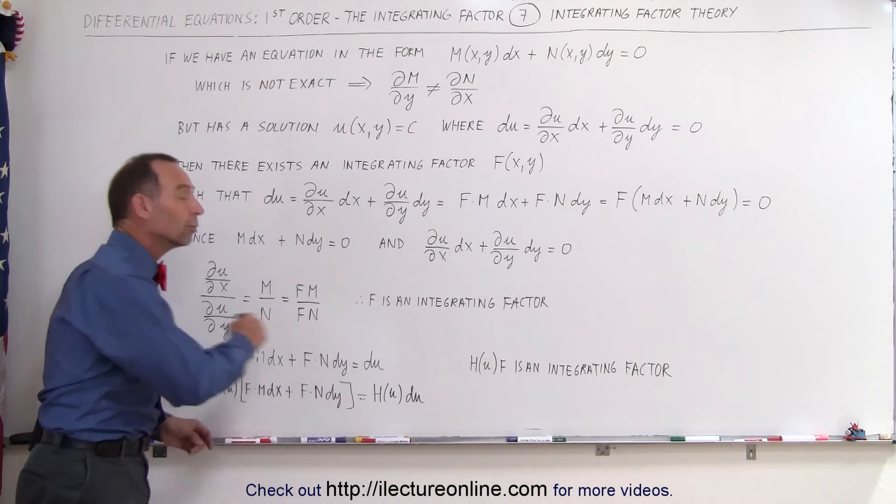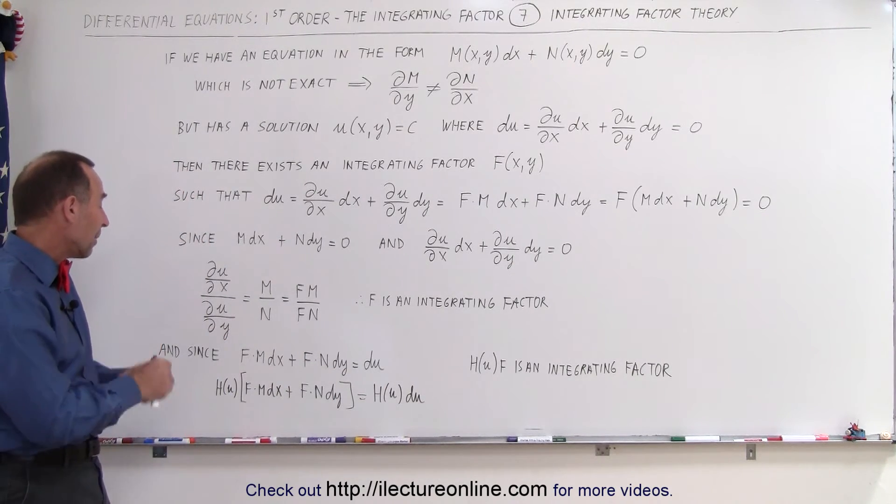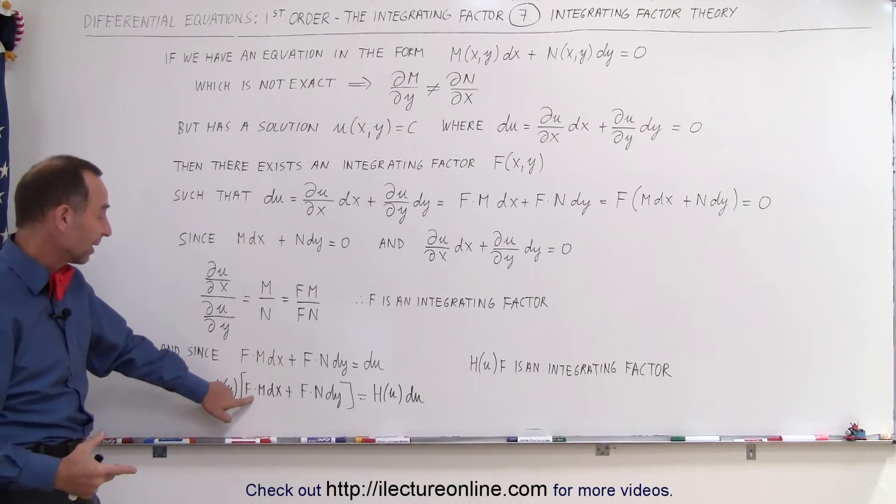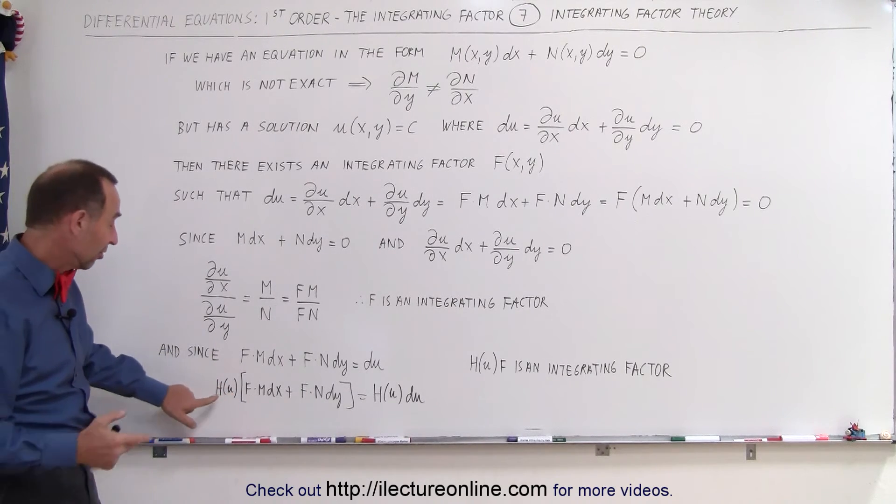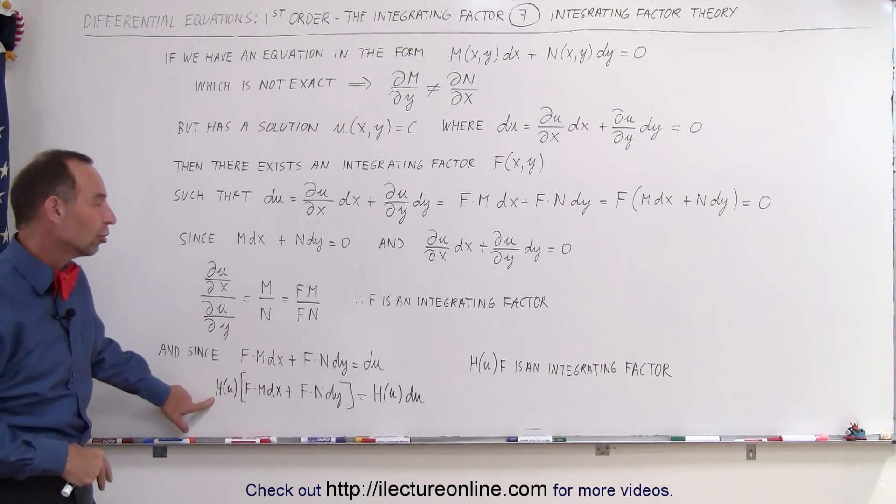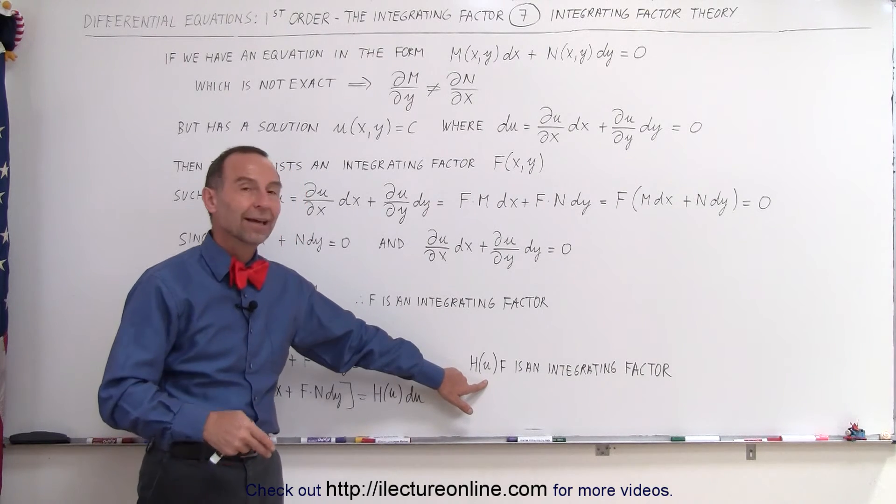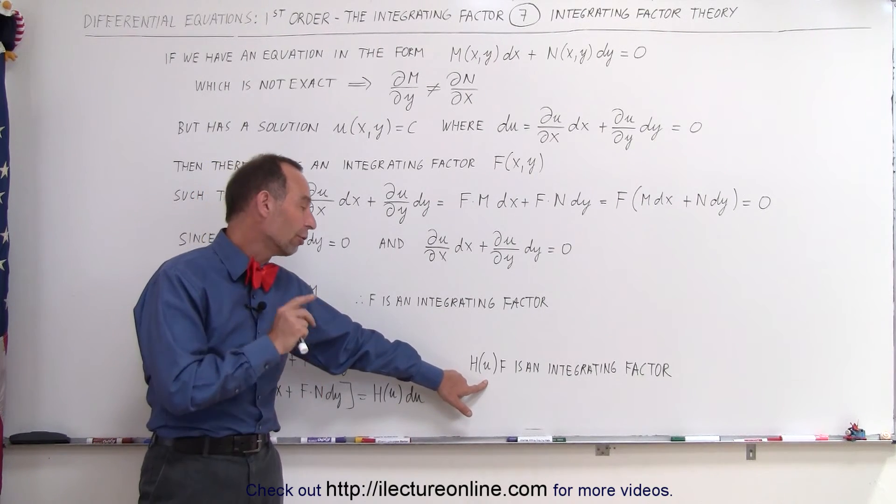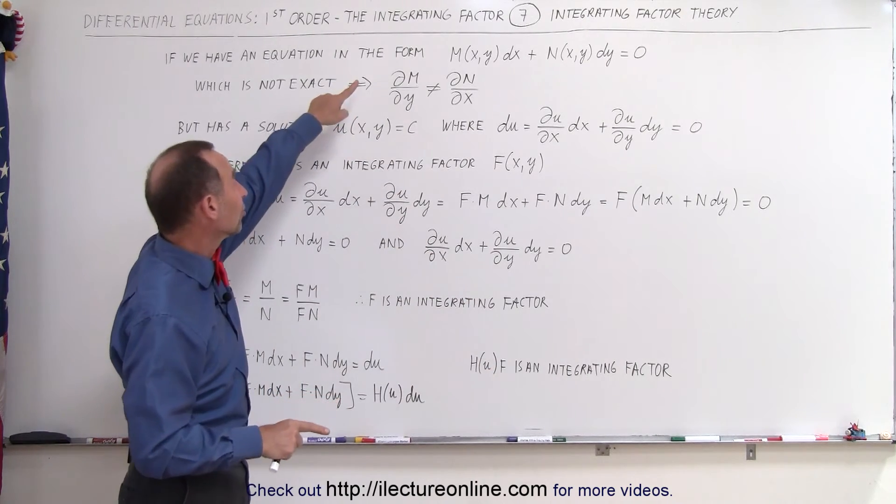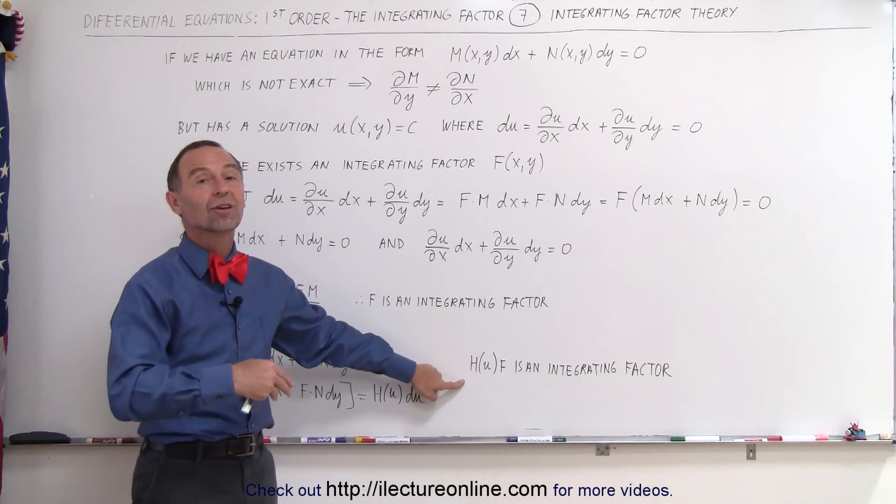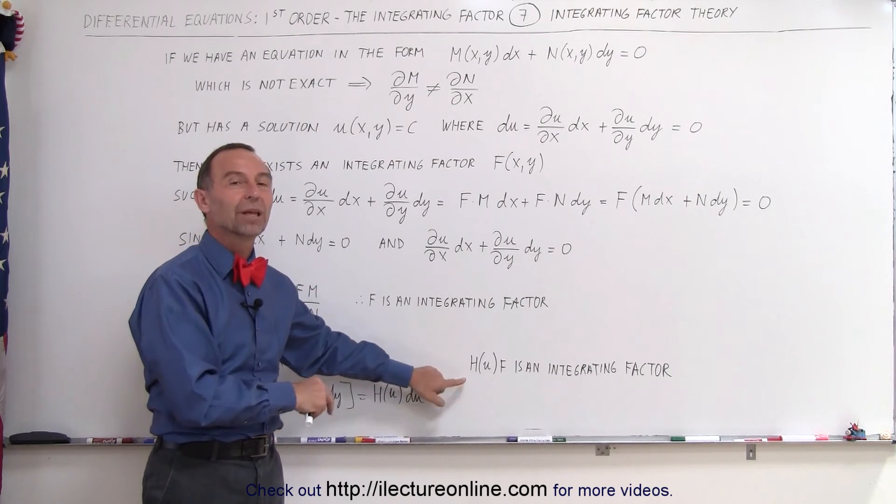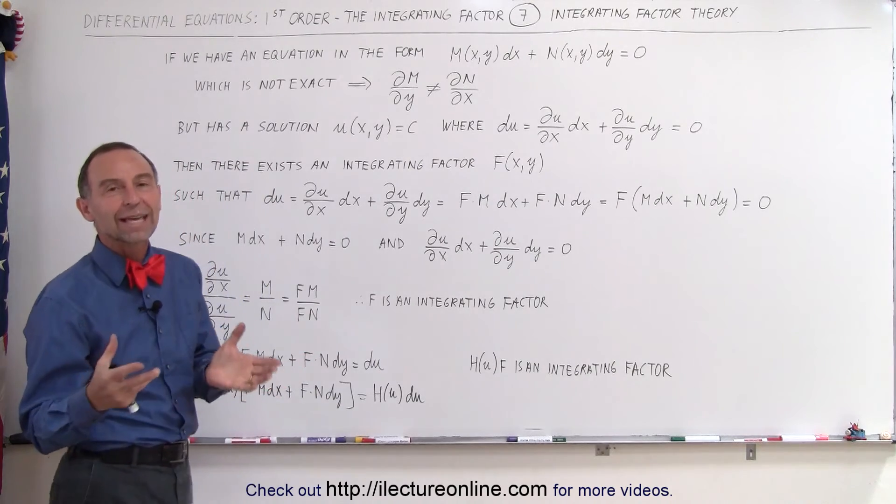Which means that the integrating factor now becomes simply h, some function of u multiplied times the integrating factor. And since we can plug in any arbitrary function of u, any arbitrary function of the solution, we then know there must be an infinite number of integrating factors, all of the form F, an integrating factor that will make this equation exact, multiplied times any function of the solution. And so that's a theoretical way of looking at integrating factors.